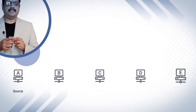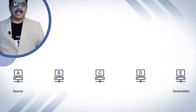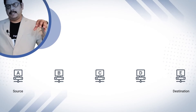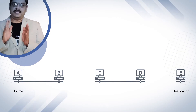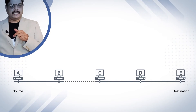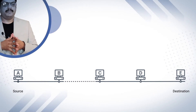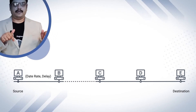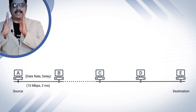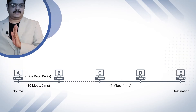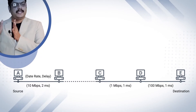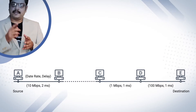Consider an example where there are two nodes A and E as source and destination, with three intermediate nodes B, C, and D — so A, B, C, D, and E. Nodes A-B, C-D, and D-E are connected through a wired network, while between B and C there is a wireless network. The data rate and delay between nodes A and B are 10 Mbps and 2 ms. Between C and D it is 1 Mbps and 1 ms. Between D and E, the last link is 100 Mbps and 1 ms — that is a very fast network. The fastest link is between D and E, transmitting 100 Mbps in just 1 ms.